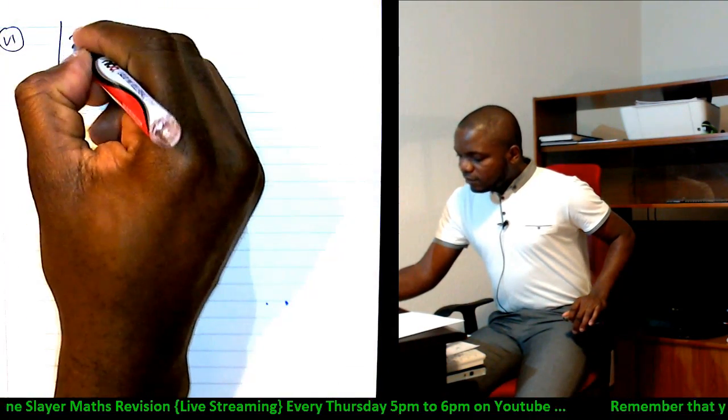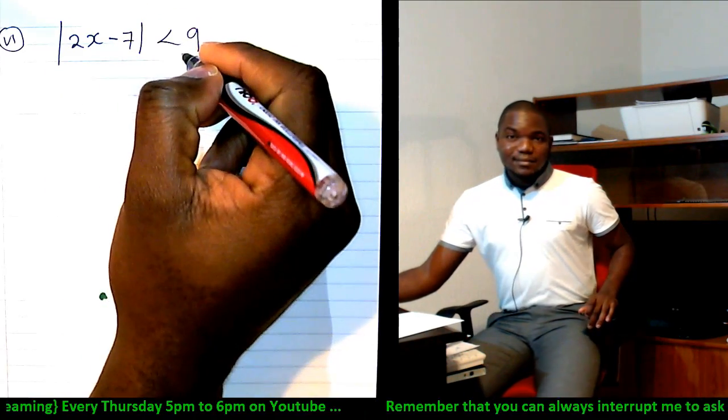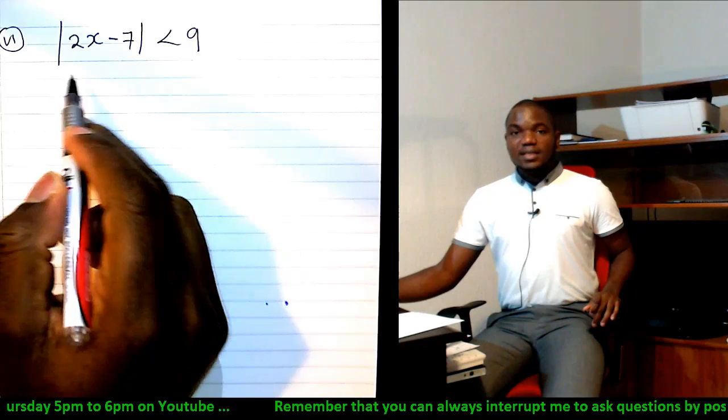And it's something you should always be able to solve any day and time. All right, the last question was number six, and it said absolute value of 2x minus 7 is less than 9.